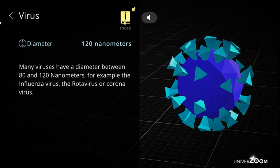Virus, diameter: 120 nanometers. Many viruses have a diameter between 80 and 120 nanometers. For example, the influenza virus, the rotavirus, or coronavirus.